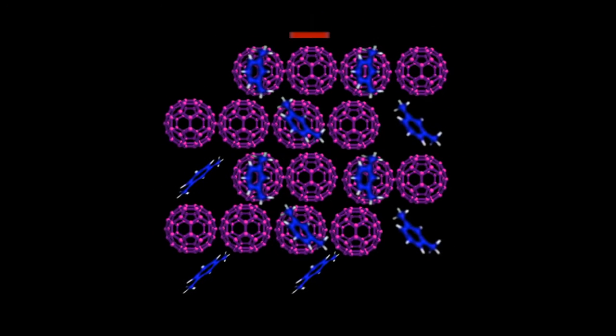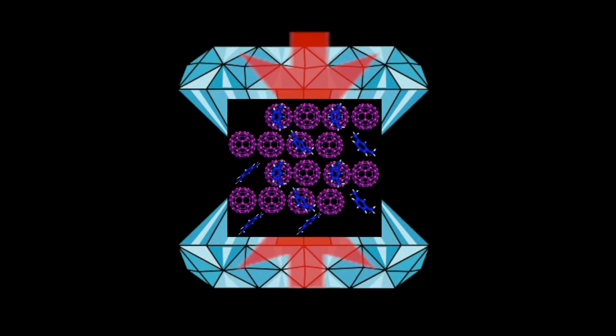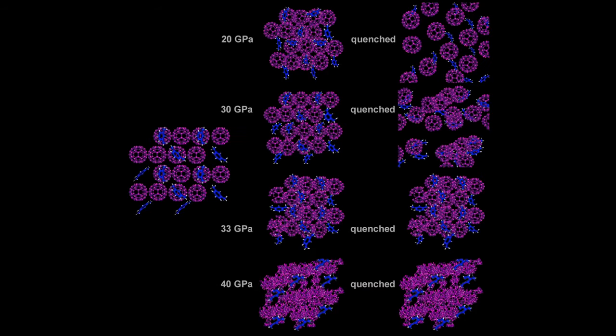The scientists then applied pressure to this combination of carbon cages and solvent to see how it changed under different stresses. At relatively low pressure, the carbon-60's cage structure remained, but as the pressure increased, the cage structure started to collapse into more amorphous carbon clusters.